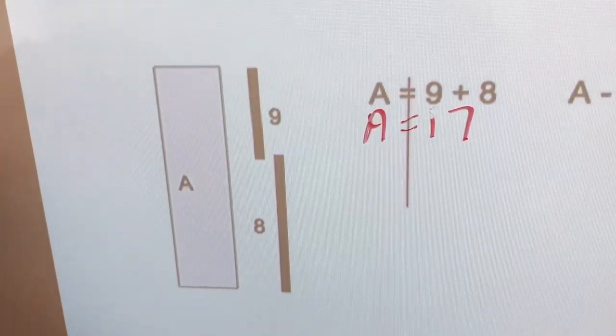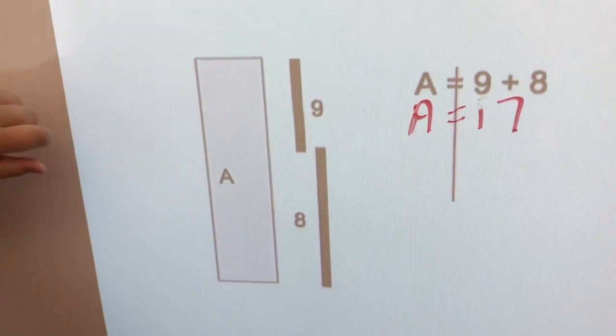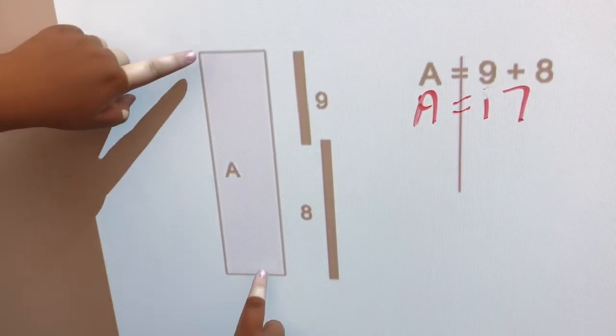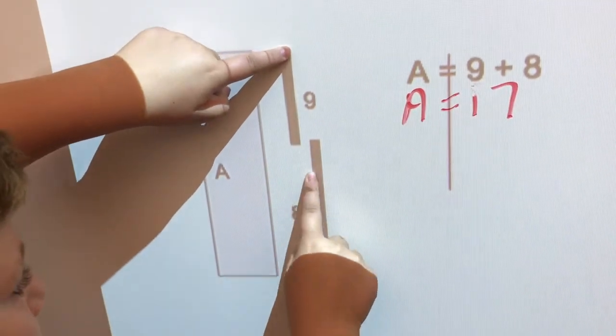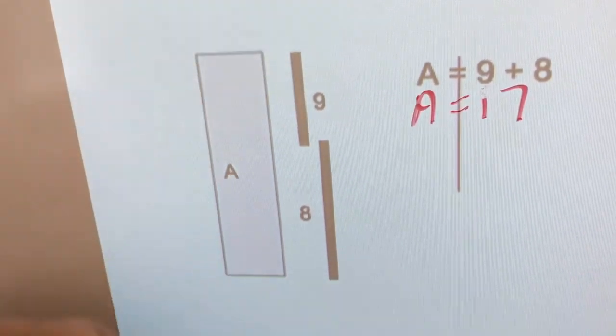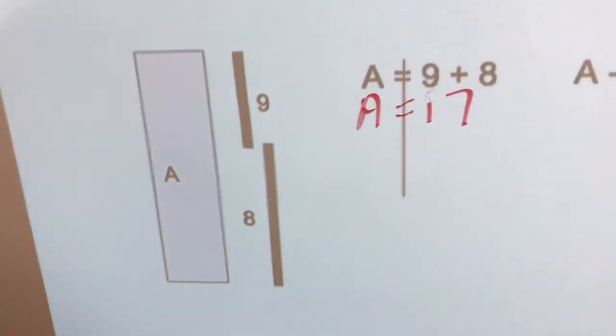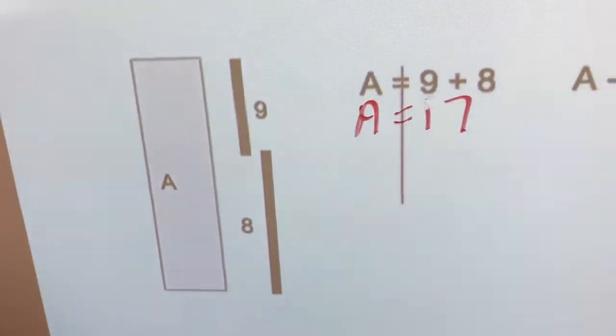We've got an equation. A equals 9 plus 8. Can you show me that on the diagram? A equals 9 plus 8. Good. So, what's the A worth? 17. Nice job. And you've got that put together.